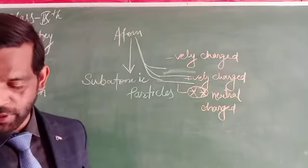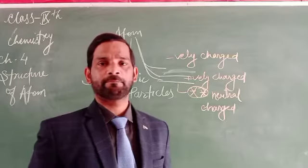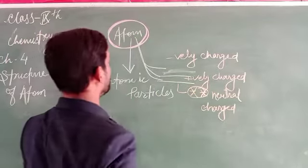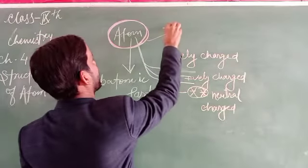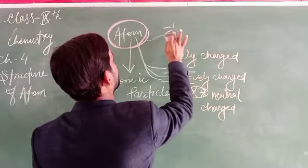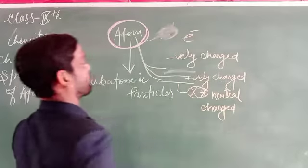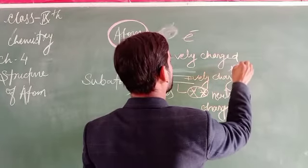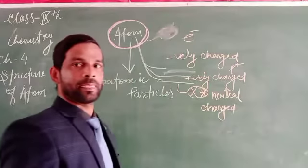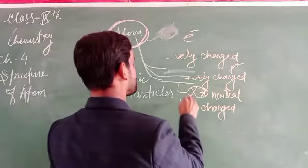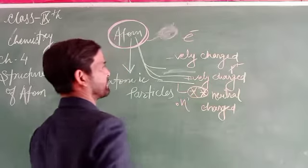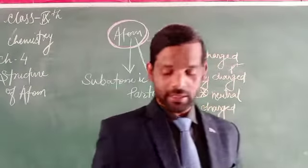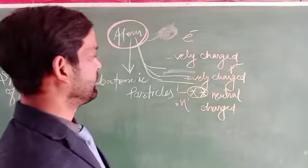So what are these positive, negative, and neutral charges? When we know that atoms are composed of three sub-atomic particles: the negatively charged one is called an electron, the positively charged sub-atomic particle is called a proton, and the neutrally charged particle is called a neutron. So the three particles have positive, negative, and neutral charges.